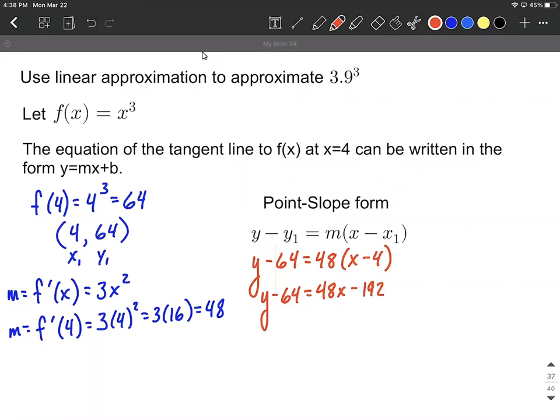To finish this up and satisfy the requirement for getting y equals mx plus b, we'll add the 64 and move it to the other side. So we'll have y equals 48x minus 128. And there we have our tangent line to this function x cubed at the value of x equals 4. That'll give us our approximation.